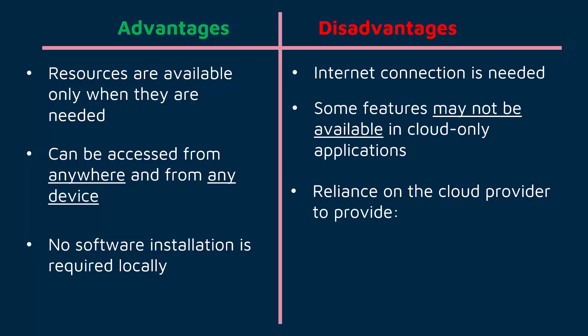You are also very reliant on the cloud provider: they need to provide decent security and keep your data private — these are linked but separate issues. A provider could have good security but still choose to share your data with certain organizations. You're reliant on them making backups; with collaboration there needs to be version control, otherwise a change could ruin the one shared file permanently without a backup. Finally, automatic updates are valuable but you are trusting the provider to keep things up to date, as outdated software can leave you at risk of a cyber attack.